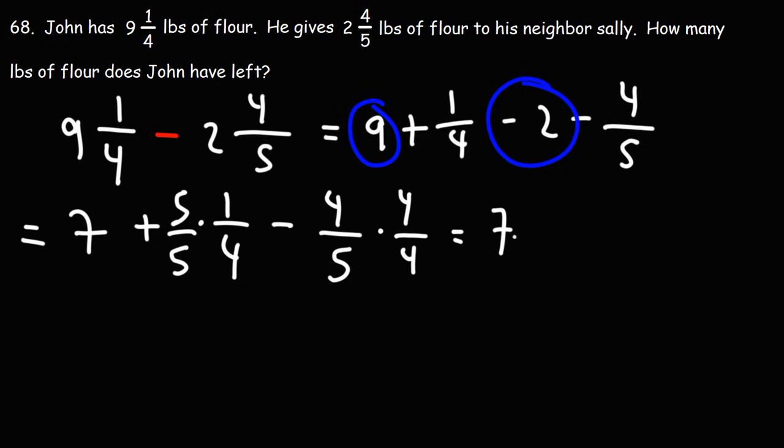So let's write the whole number seven. Here we have five times one, which is five. Five times four is 20, minus four times four is 16. Five times four is 20. Now five minus 16 is negative 11. So we're going to have seven minus 11 over 20, or negative 11 over 20.